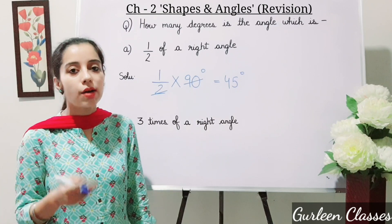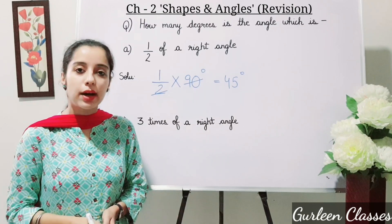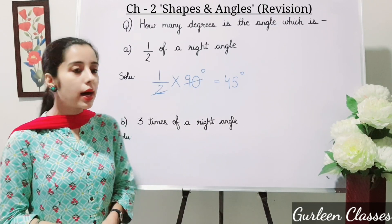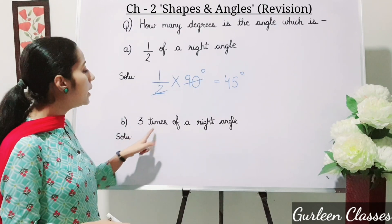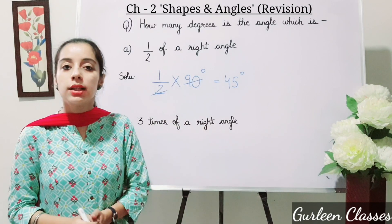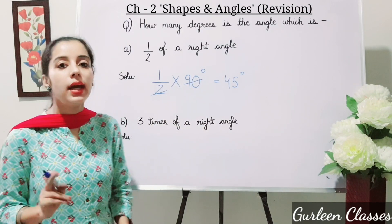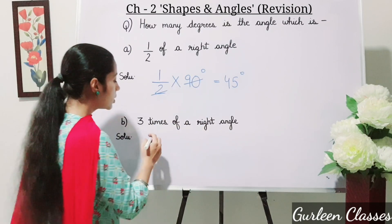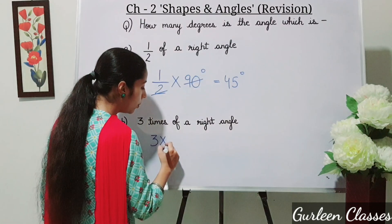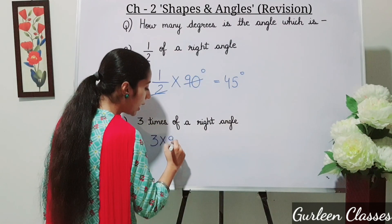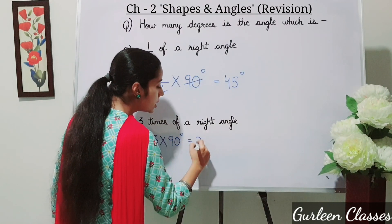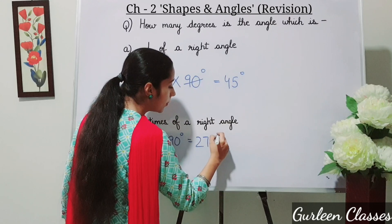That is 45 degrees. Now part B: 3 times of a right angle. 3 times means 3 into 90 degrees, which equals 270 degrees.